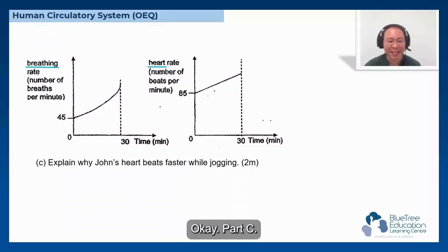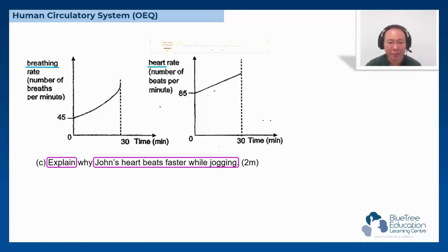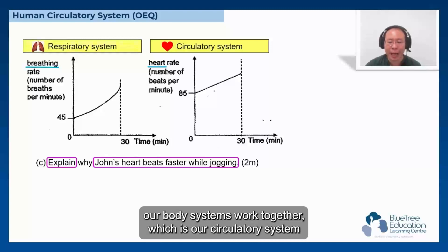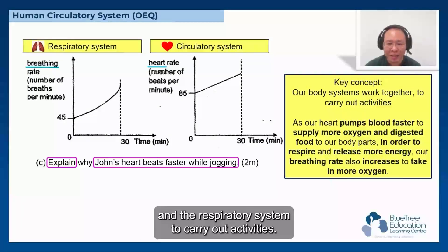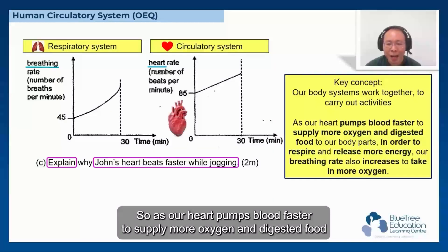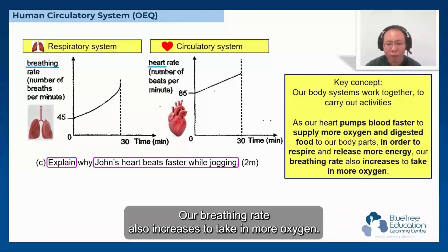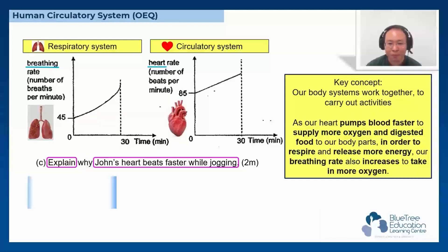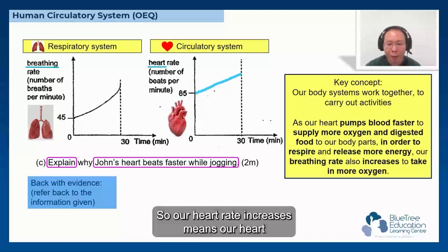Part C: Explain why John's heart beats faster while jogging. From the previous slide, our body systems — the circulatory system and the respiratory system — work together to carry out activities. As our heart pumps blood faster to supply more oxygen and digested food to our body parts in order to respire and release more energy, our breathing rate also increases to take in more oxygen.